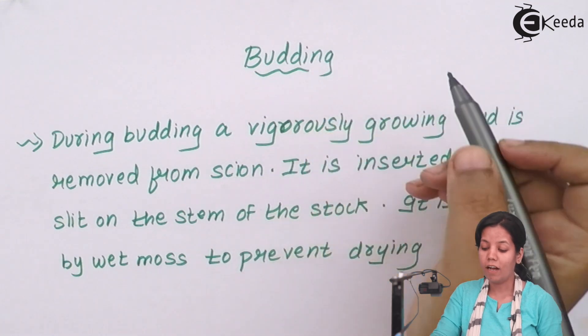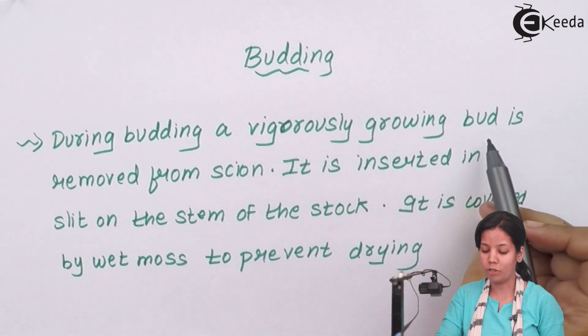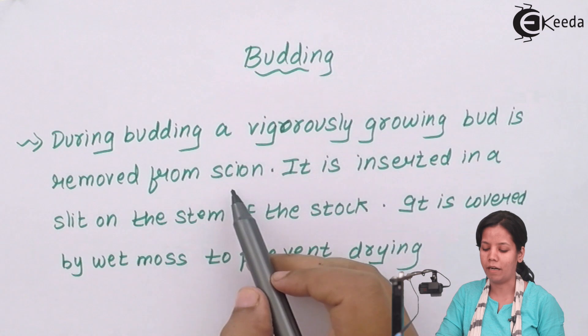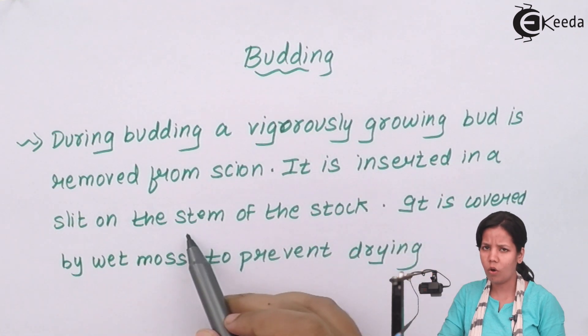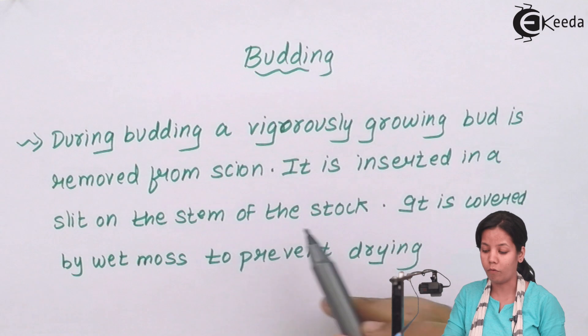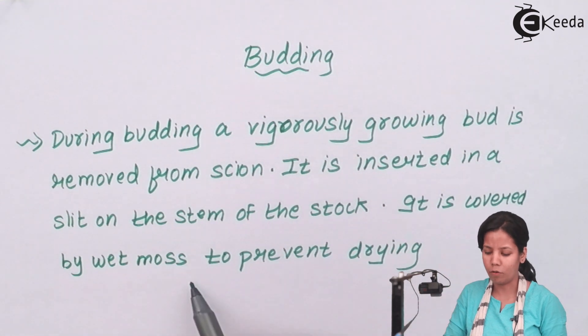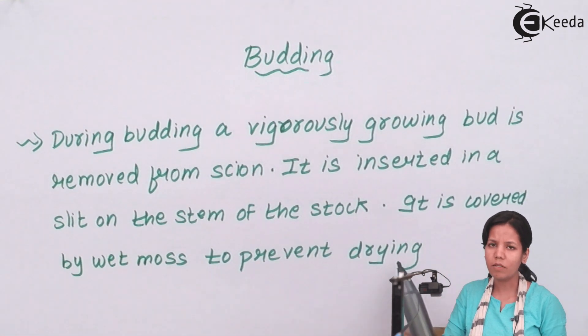During budding, a vigorously growing bud is removed from the scion region, the upper part. It is inserted into the slit of a stem, a cut made in the stem of the stock. It is covered by wet mosses to prevent drying. This process can be done for some varieties of rose.